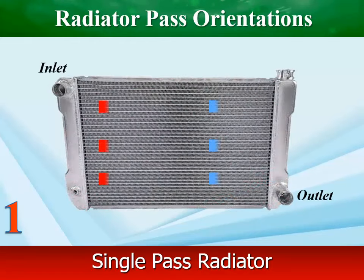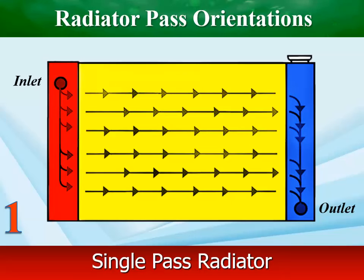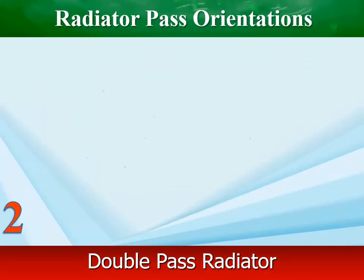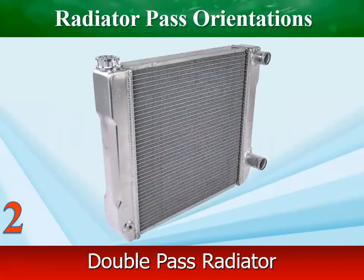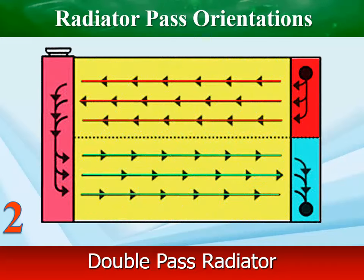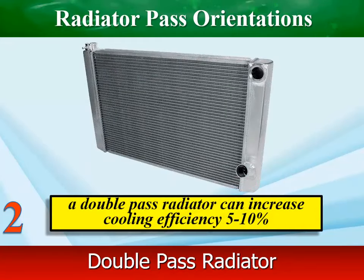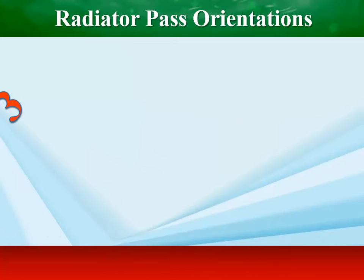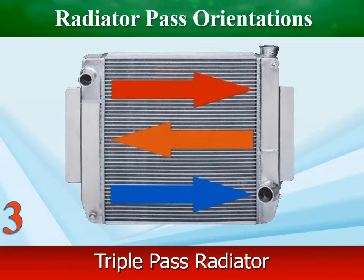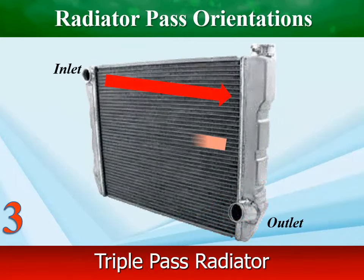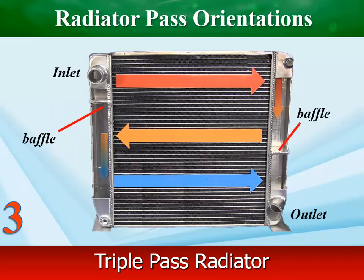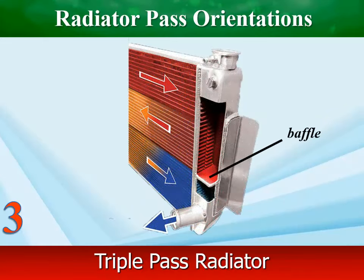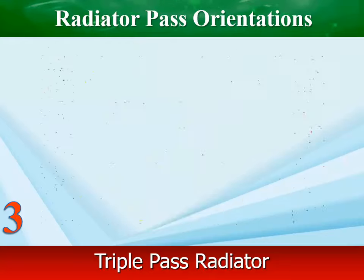In a single-pass radiator, coolant only crosses the radiator core once — from the inlet to the outlet — and the inlet and outlet are usually located opposite each other. A double-pass design uses a baffle welded inside the end tank that cuts the radiator in half, and the coolant flows through each half in a series U-flow, with both inlet and outlet on the same tank. In a triple-pass radiator, coolant crosses the core three times, with the inlet and outlet on opposite sides. The triple-pass design has two baffles — one in each end tank — dividing the core into three sections, creating very high flow rates and high pressure drops through the system.